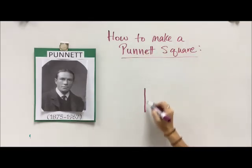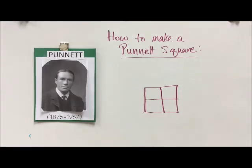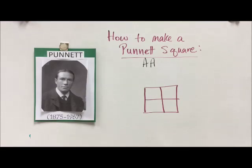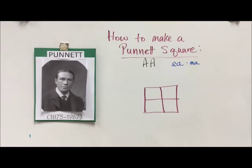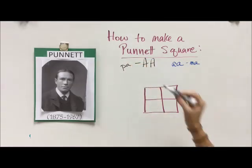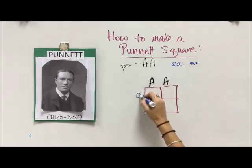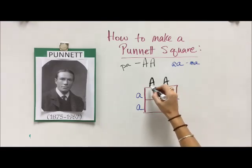You're going to draw a square — hence the square — and then a line down and across, so it kind of looks like a window you draw in a house as a little kid. Let's say we have a parent that is homozygous dominant, big A big A, and another parent that is homozygous recessive, little a little a. We'll call this person mother, or ma, and this person pa — maternal and paternal. We're going to put one parent above the boxes on top and the other parent on the side.